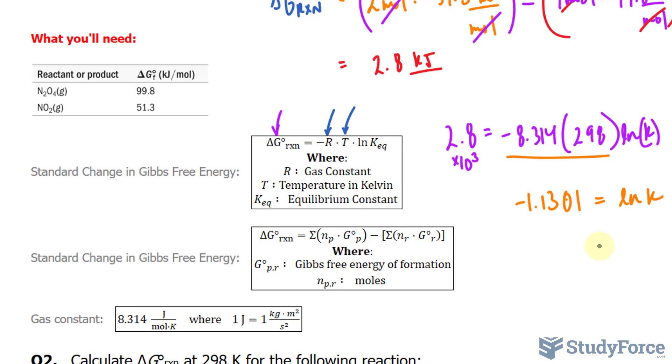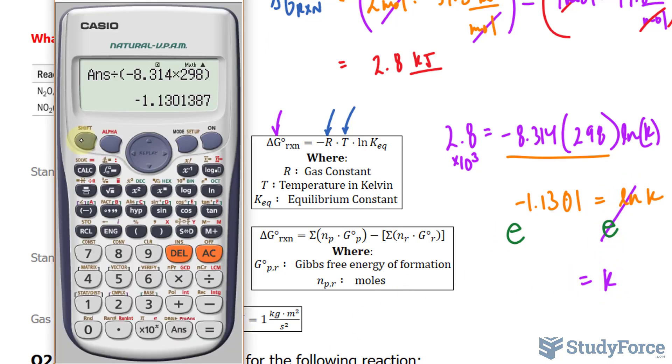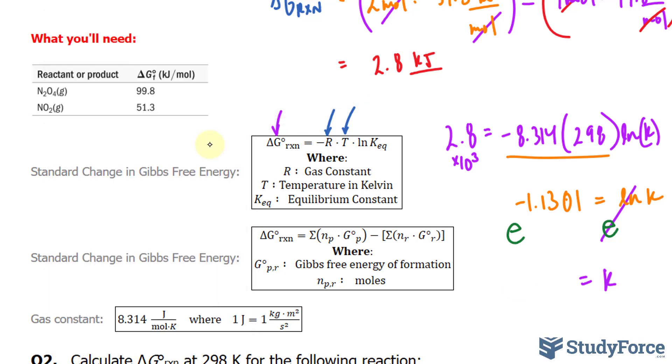To isolate for k, I'll raise both sides of this equation as powers to the base e. So these are exponents, and that's your base, and what this will do is cancel out the ln and the e, leaving us with k, what we're looking for. So Euler's number raised to this number, and we get 0.3229. We can stop writing after two decimal places. So 0.32 is the equilibrium constant.